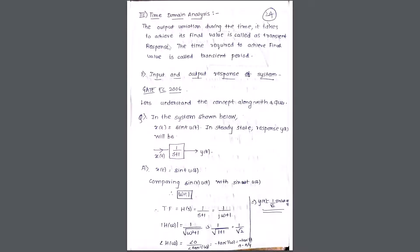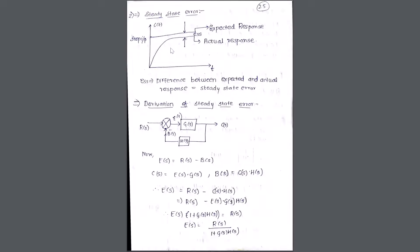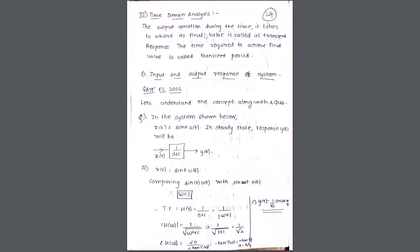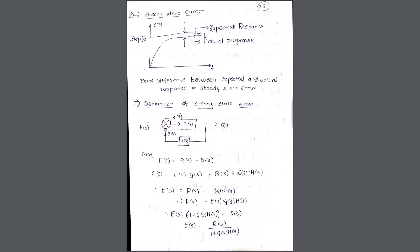The output variation during the time it takes to achieve its final value is called the transient response. From zero to the time required to reach or achieve the final value is the transient response, and the time required to reach the steady state value is the transient period. So, starting from zero to reaching the steady state value — the response between is the transient response and the time required is the transient period.